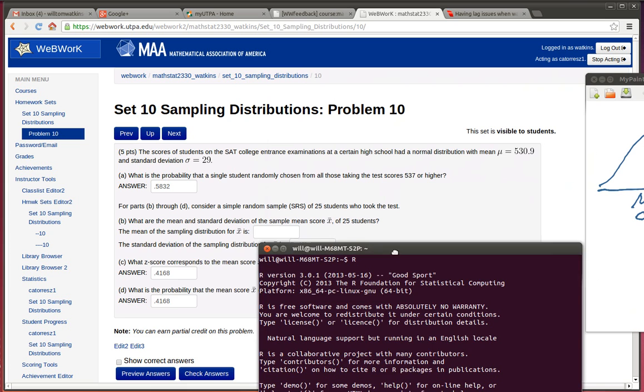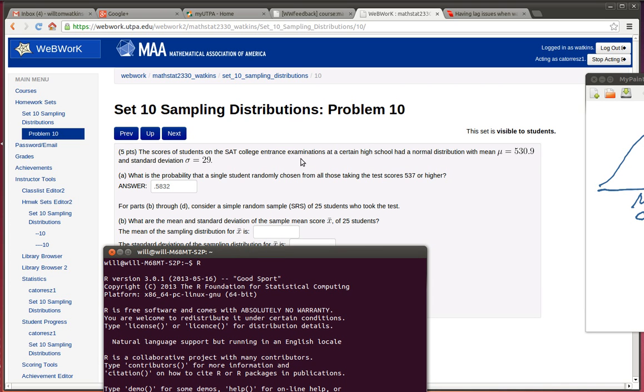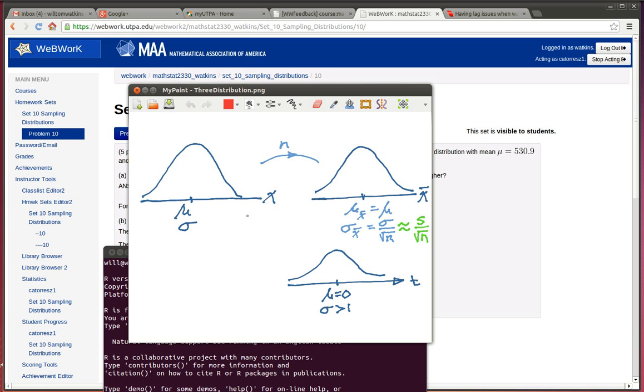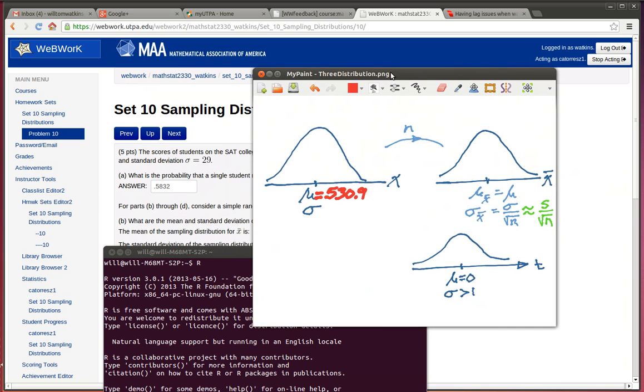Okay so let's look at the problem. The scores of students in an SAT college entrance exam at a certain high school had a normal distribution. That's a population mean. So I'm looking at this distribution and they're telling me that the mean of that entire population is 530.9. Not only that, because they knew all the scores of the entire population, they know that the standard deviation is equal to 29. Okay so here we've got a normal distribution, a mean of 530.9 and a standard deviation of 29.